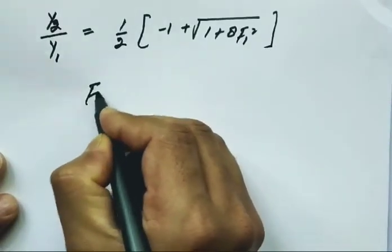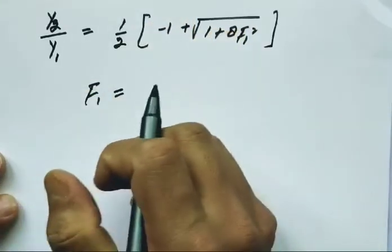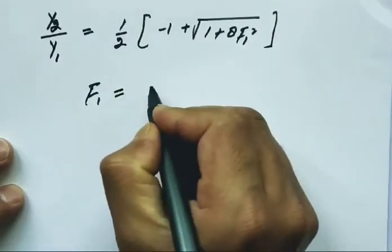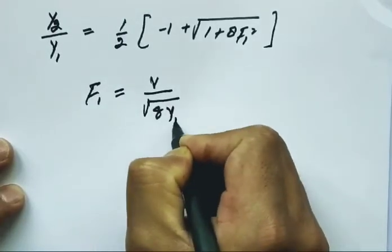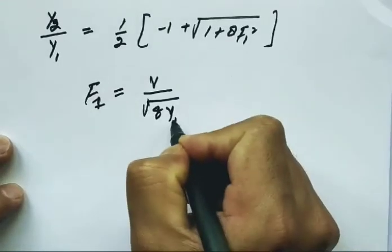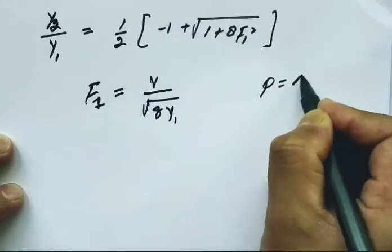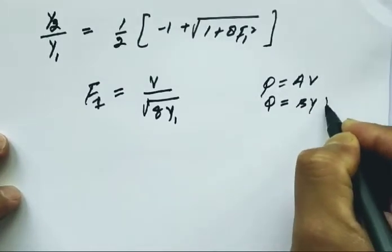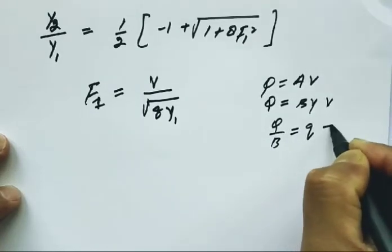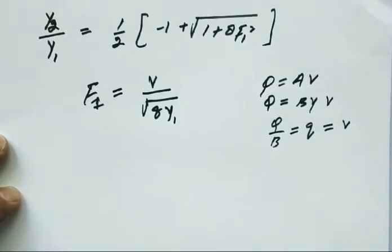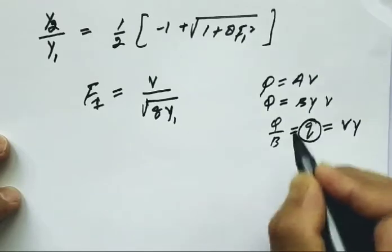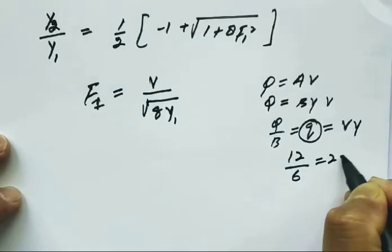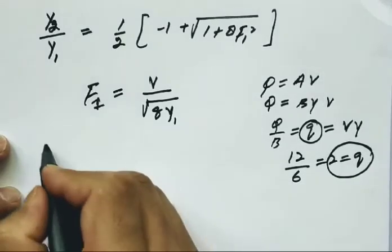First we need to calculate the Froude number for the supercritical flow, F1. The formula is F equals V upon square root of gy. Discharge per unit width q equals Q/B, which is 12/6, so q equals 2.